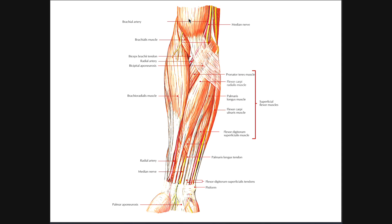Up here at the top is the biceps brachii muscle. We're only seeing the distal part, so we can't see either head. Remember there's a short head, which is medial, and a long head, which is lateral, but that's way up near the shoulder joint. Here's the common belly of the biceps brachii. We see the biceps brachii tendon, which is going to insert on the radial tuberosity. However, we have this other broad tendon called the bicipital aponeurosis, which is actually going to wrap around and have an insertion on the ulna. We usually think of the biceps as only inserting on the radius, but due to this bicipital aponeurosis, which wraps around some of these superficial muscles of the forearm, it actually has an insertion on the ulna as well, which helps stabilize those two bones together when performing an exercise like a bicep curl or even tricep extensions.